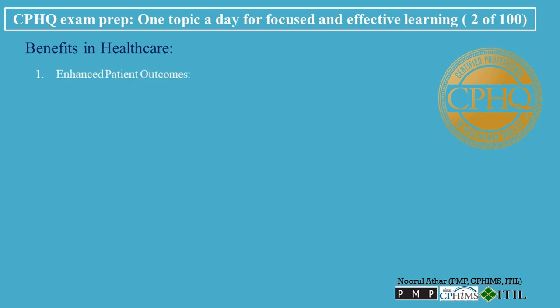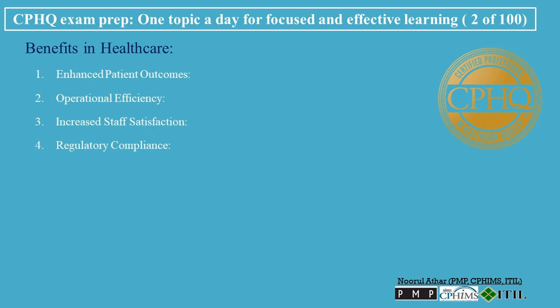Benefits in Healthcare: 1. Enhanced Patient Outcomes — At its core, PI aims to provide better patient care. Improved processes can lead to quicker recoveries, fewer complications, and better overall patient experiences. 2. Operational Efficiency — Streamlined processes can lead to cost savings, reduced waste, and better utilization of resources. 3. Increased Staff Satisfaction — When processes are optimized, healthcare staff often find their jobs more rewarding and less stressful. 4. Regulatory Compliance — Many regulatory bodies require continuous PI as part of accreditation, and regular PI efforts help organizations stay compliant with industry standards.